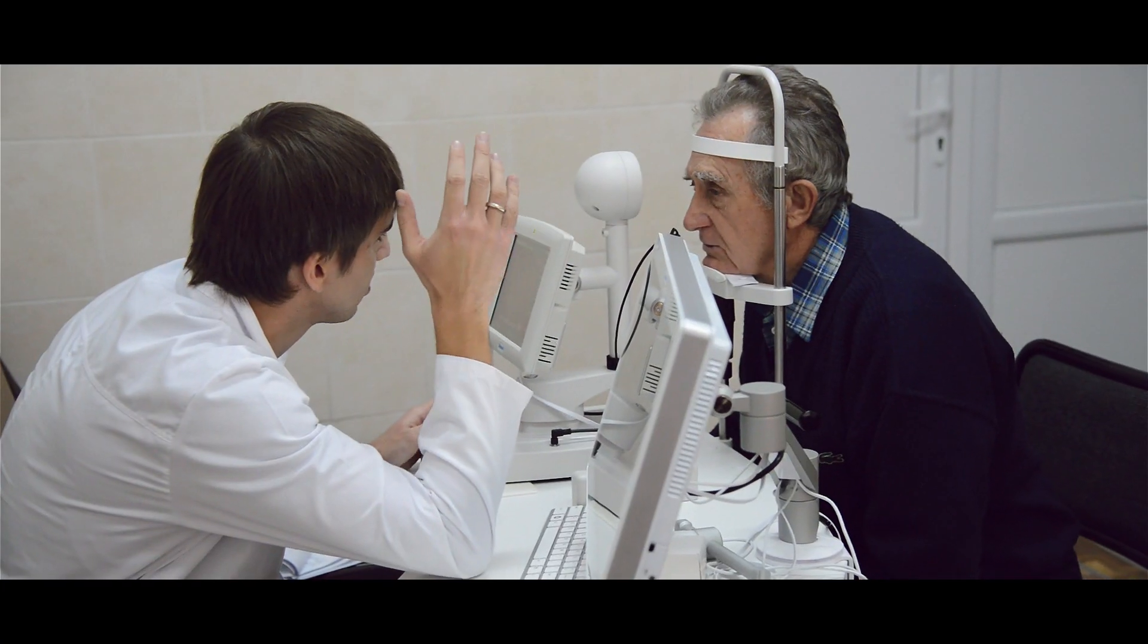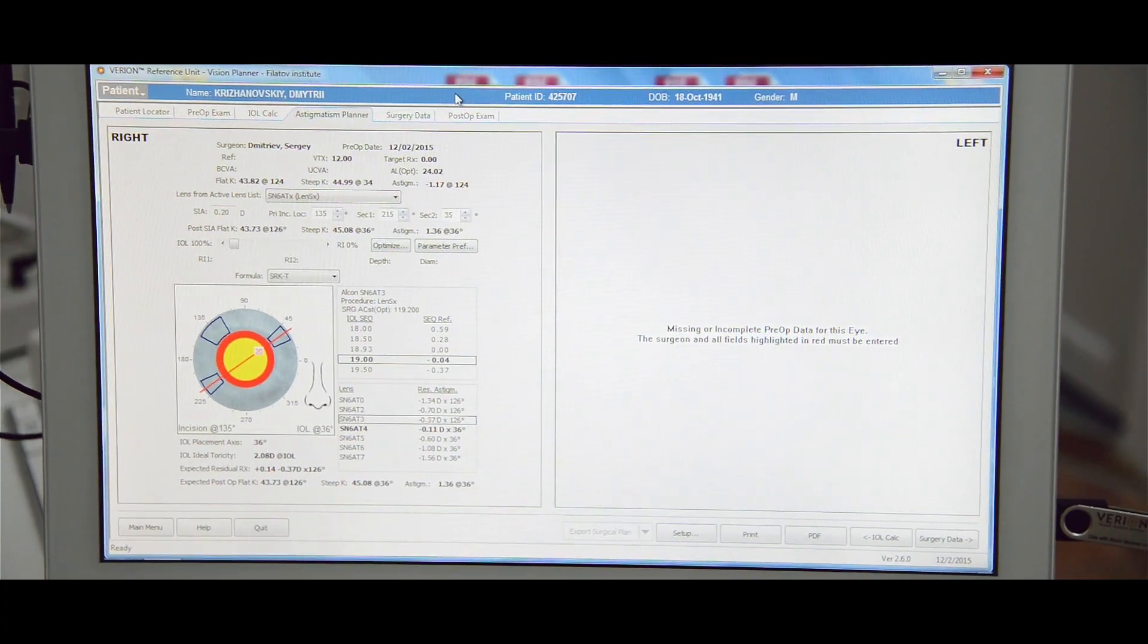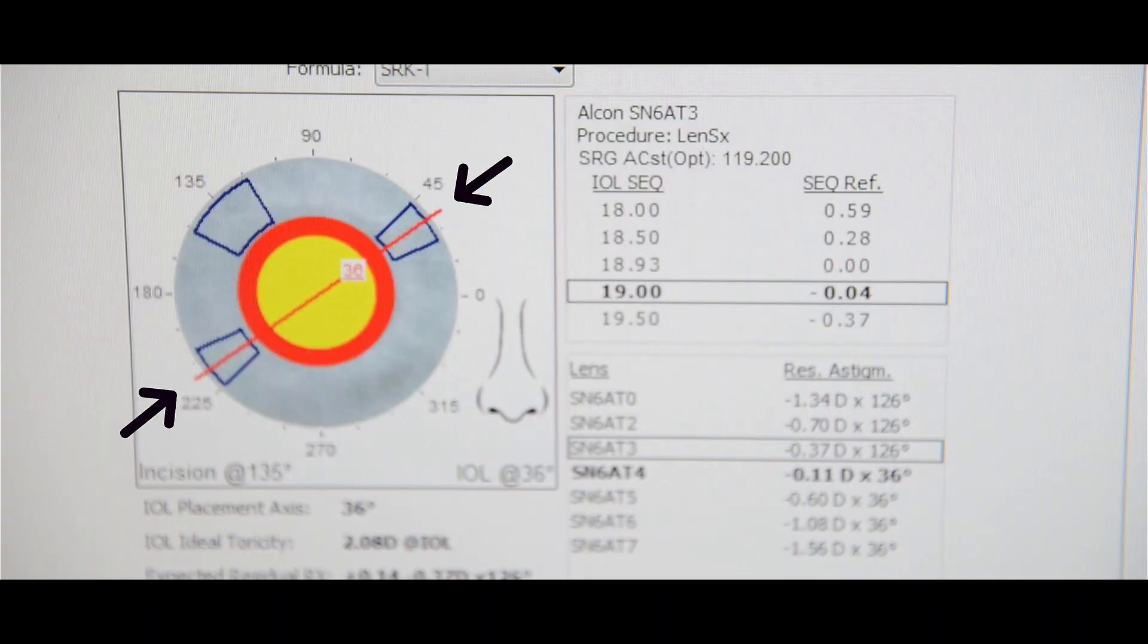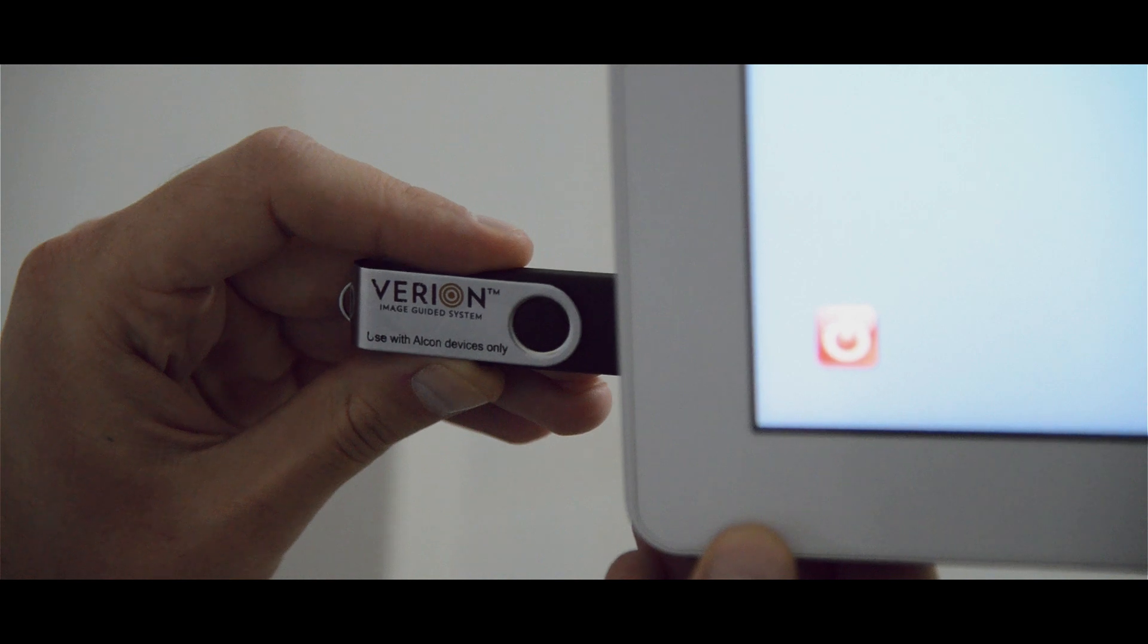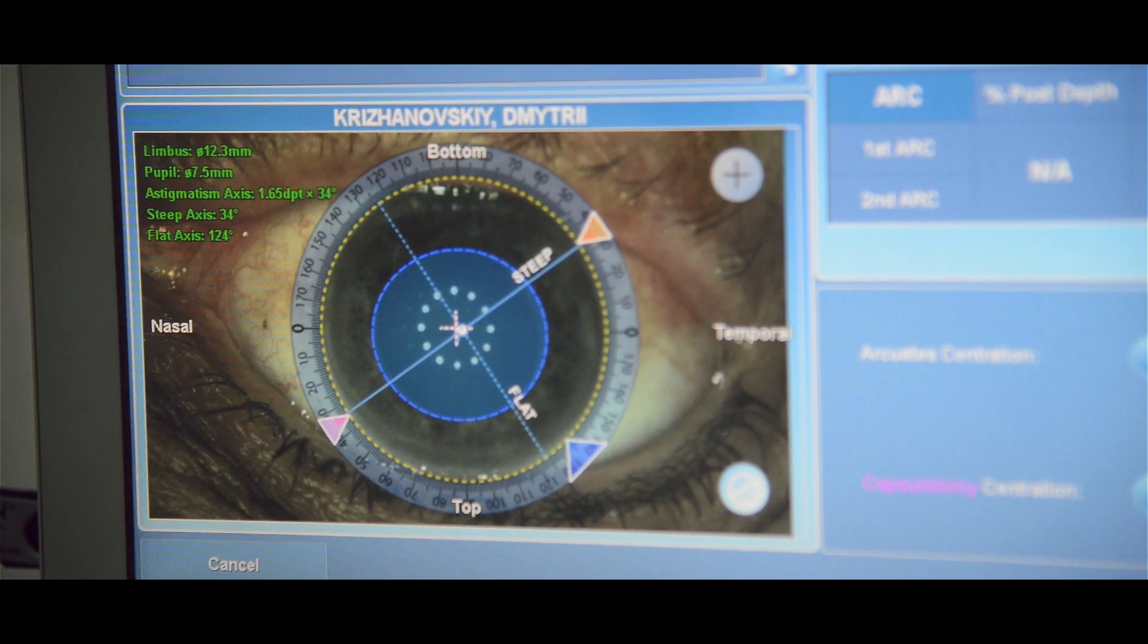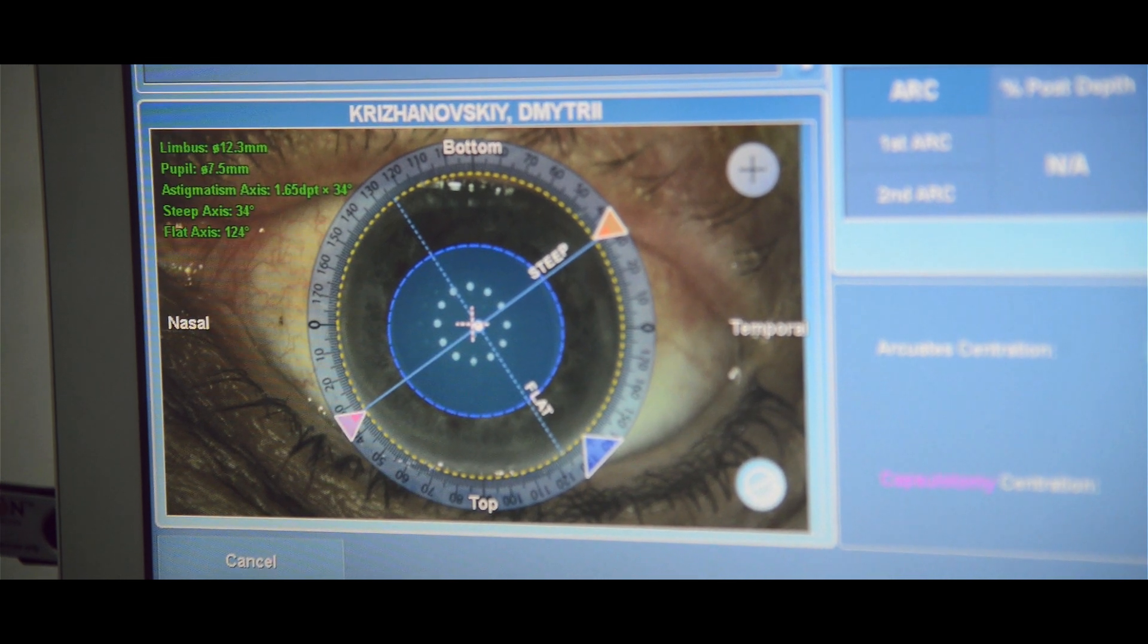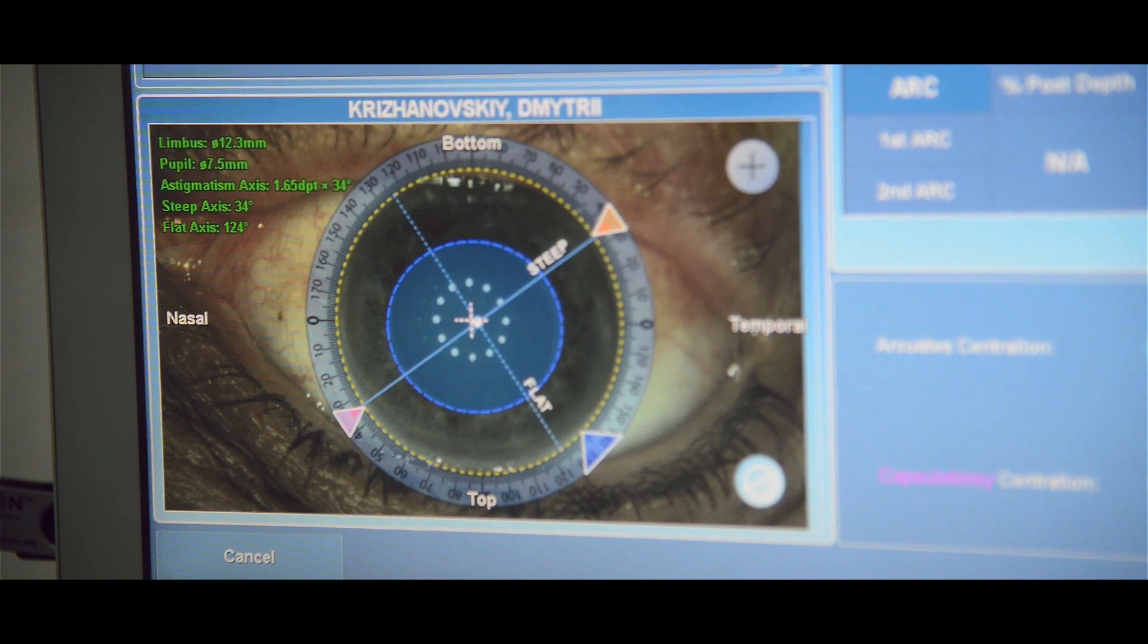Corneal curvature parameters of the right eye were measured via Variant image guidance system. Location of steep meridian axis was taken into consideration during planning of corneal incision sites. The steep meridian was 44.95 diopters, axis 35 degrees. The amount of astigmatism was 1.65 diopters.